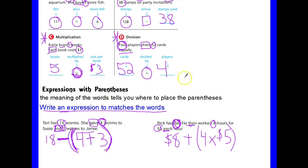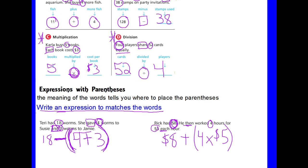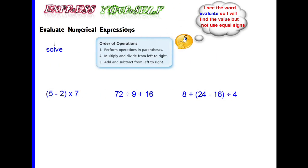Now let's look and see what we need to do when we have to use the order of operations. Now when we're using the order of operations, we're being asked to evaluate. So this time we do see the word evaluate and we will find the value. But we will not use equal signs. We're going to follow the order of operations. Parentheses. That's what we would do first. Multiplication and division from left to right or addition and subtraction from left to right.